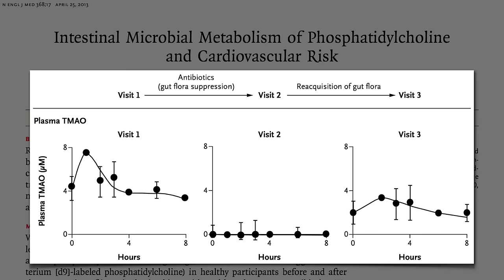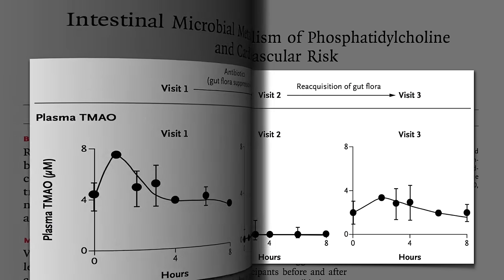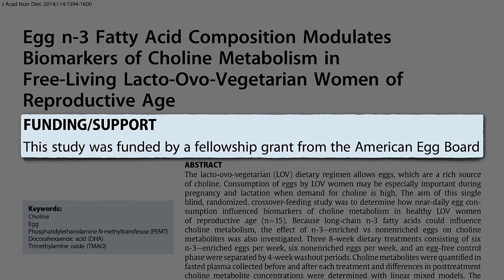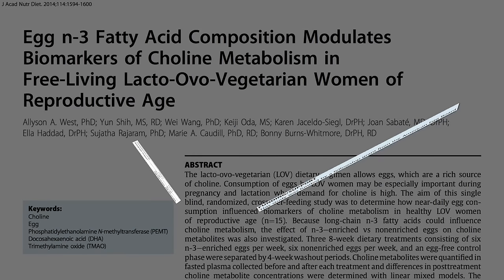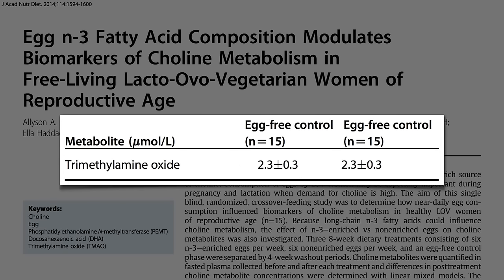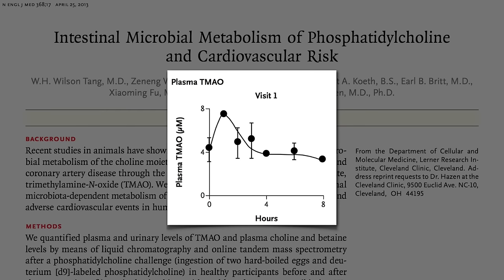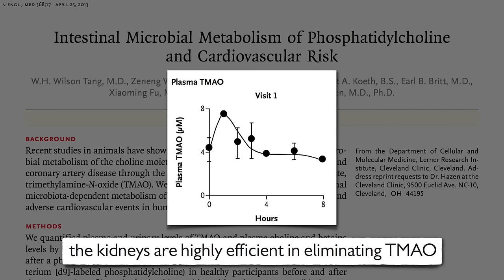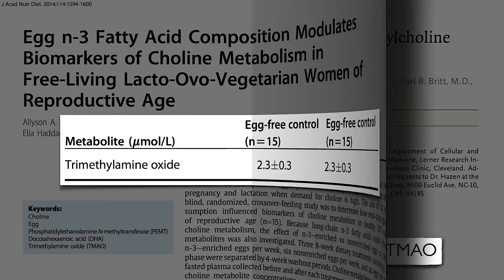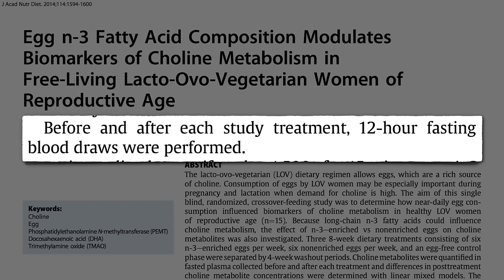These findings did not thrill the egg industry. Imagine you work for the American Egg Board, tasked with designing a study to show no effect of eating nearly an egg a day. How could you rig it to show no difference? If you look at the effect of an egg meal, you get a bump in TMAO levels, but your kidneys are so good at getting rid of this stuff that by hours 4, 6, 8, you're back to baseline. So all you have to do is make sure they hadn't eaten those eggs in the last 12 hours, and you can show no effect, and get your study published in the Journal of the Academy of Nutrition and Dietetics, and collect your paycheck.